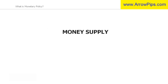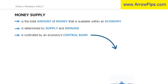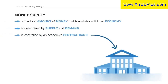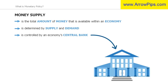Monetary policy controls the money supply within an economy and it is controlled by an economy's central bank. The money supply is the total amount of money available within an economy, and because the value of a currency is determined by supply and demand, just as any other financial asset, the actual supply of money has a significant impact on the currency value.